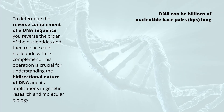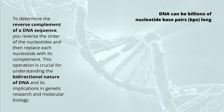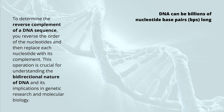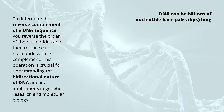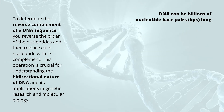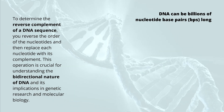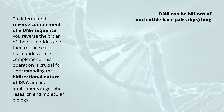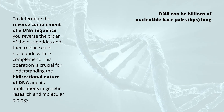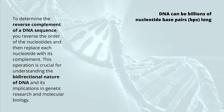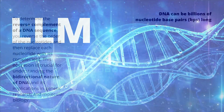To choose the right AI system, remember that DNA can be billions of nucleotide base pairs long. To determine the reverse complement of a DNA sequence, you simply reverse the order of the nucleotides and then replace each nucleotide base with its complement base. This operation is crucial for understanding the bidirectional nature of our DNA strands and all its implications in genetic research and molecular biology.